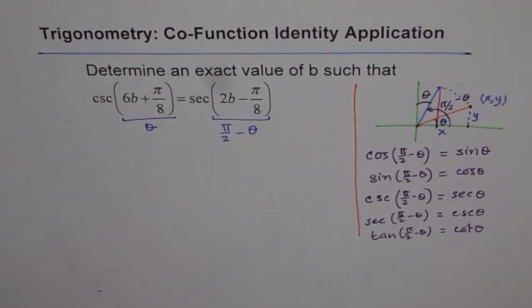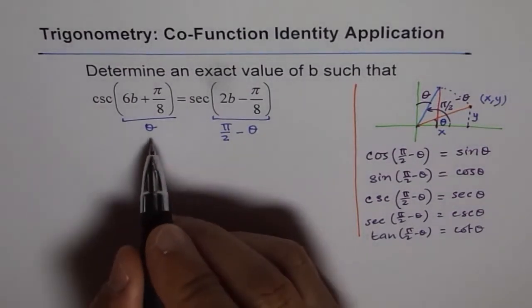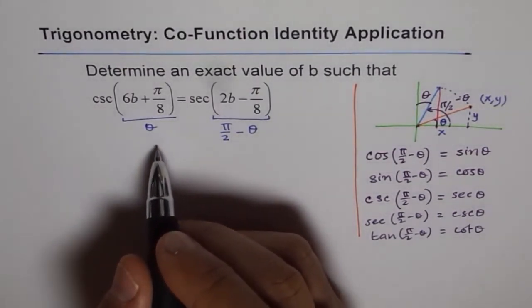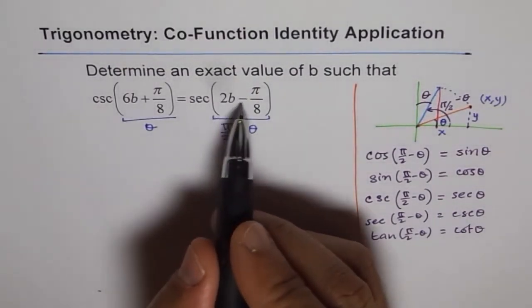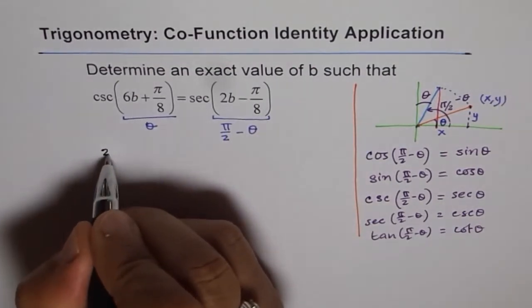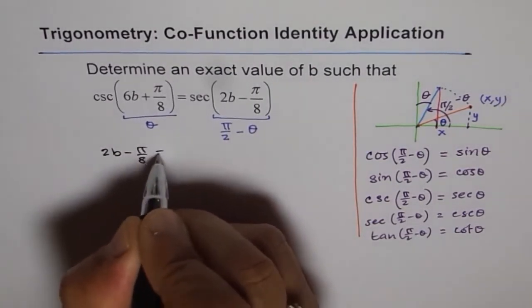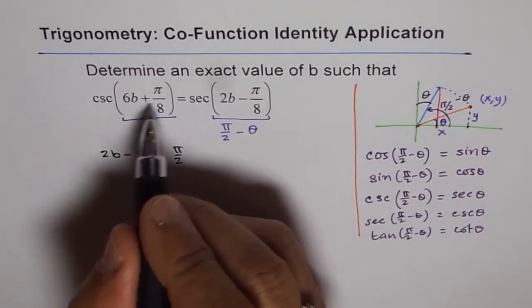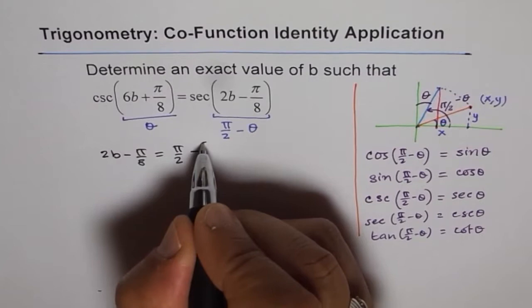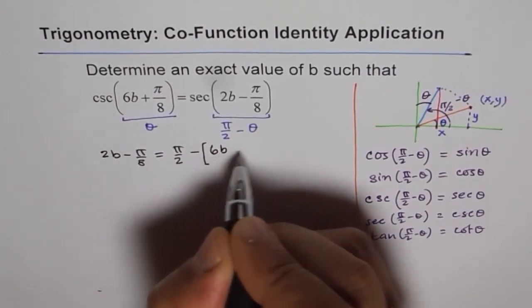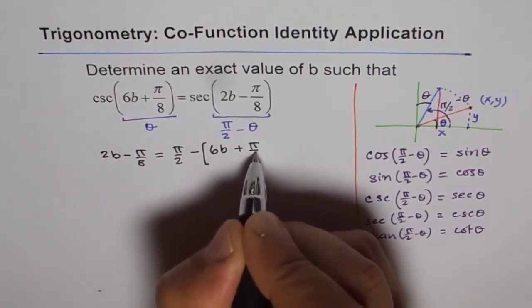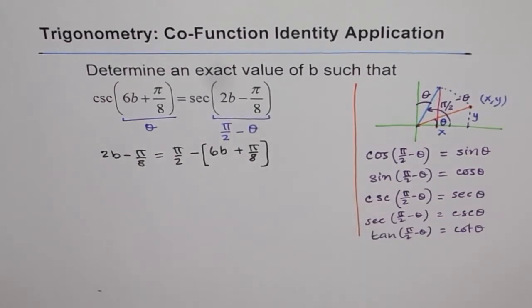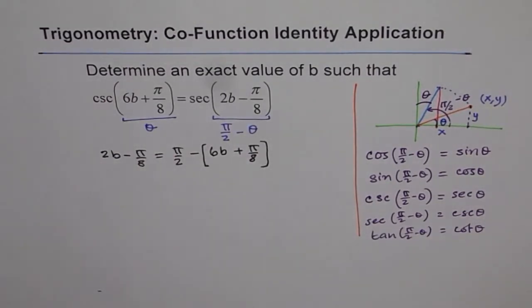We have only one variable to solve. From here, let us write that this angle, 2b minus π by 8, should be equal to π by 2 minus theta. That is our theta, which is 6b plus π by 8. That is the application of our co-function identity.